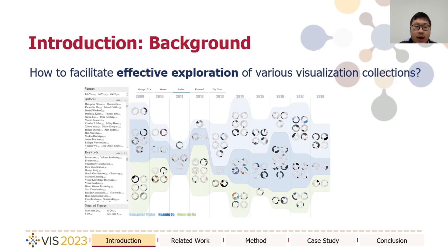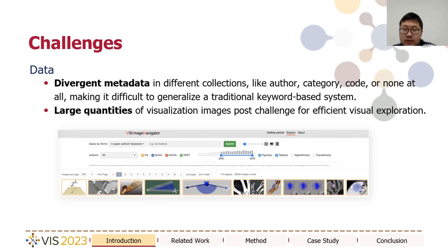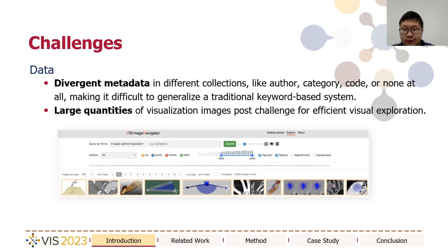So the problem we focus on is how do we support more effective exploration of various visualization collections? To address the problem, we are faced with several challenges. In terms of the data, many different collections have divergent metadata. Some collections have rich metadata like author, category, or even the visualization code. But other collections may have little or none metadata at all, which makes it very difficult to generalize the traditional keyword attribute-based system for exploring different collections.